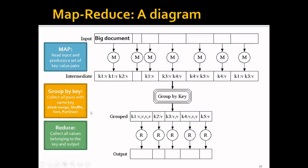The second step is the GroupByKey step, which collects all the pairs with the same key and puts them together, as you can see here. And the last step, the reduce step, will be performed in a reduce node. It will collect all the values belonging to a key and output a final pair.